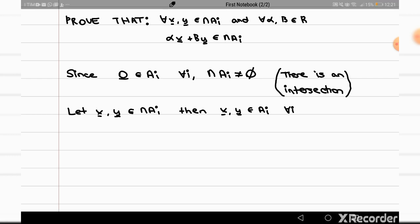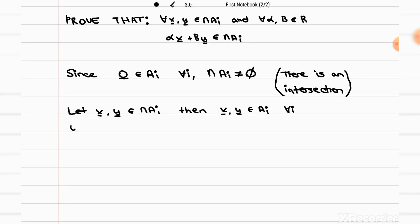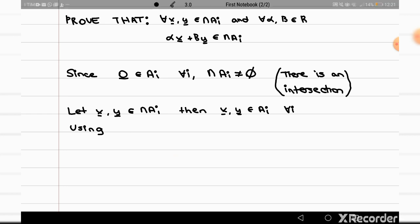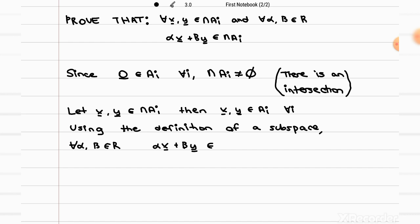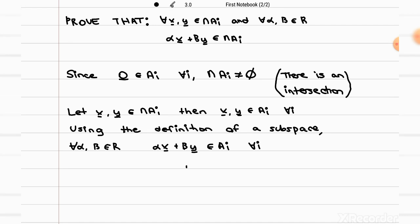Using the definition of a subspace, we know we have to satisfy the fact that linear combinations of the vectors must be in the set. So for every alpha and beta which are real numbers, alpha x plus beta y is in each subspace. And since that's going to be the case for every subspace Aᵢ, that's equivalent to saying that alpha x plus beta y will also be in the intersection.